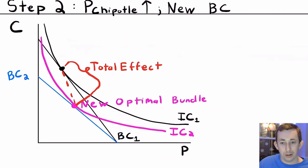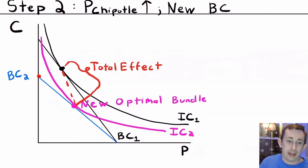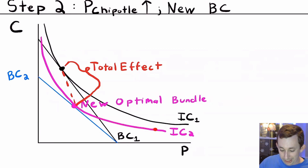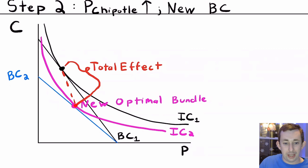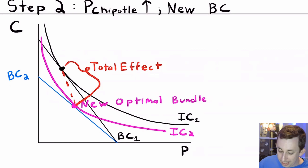Now we are going to find the new optimal bundle when the price of Chipotle goes up. We have a new budget constraint. That new budget constraint is going to meet pasta at the same place as before because the price of pasta hasn't changed, but we can now buy a lower amount of Chipotle if we spend all our money on Chipotle. We get a new indifference curve shown in pink, find our new optimal bundle — also in pink — and the difference between our OG optimal bundle and our new optimal bundle is the total effect. That is the effect we're trying to split into the substitution effect and the income effect.